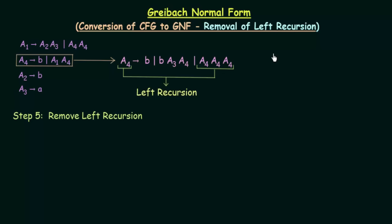In the last lecture we studied about Greibach Normal Form and we also saw how to convert a given CFG to Greibach Normal Form. As we were converting, we studied four different steps that we had to follow in order to convert a CFG to GNF. And in the fourth step we encountered something known as left recursion, and I told you that in the next lecture we will be studying about how to remove it, and after that our CFG to GNF conversion will be complete.